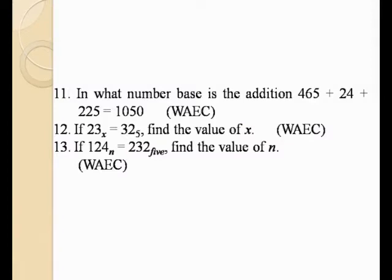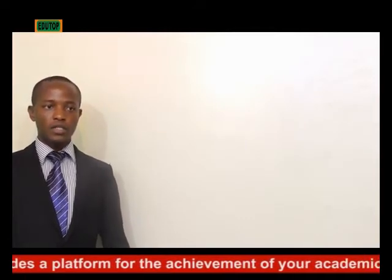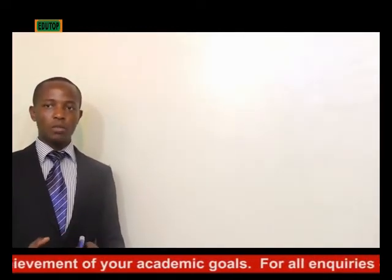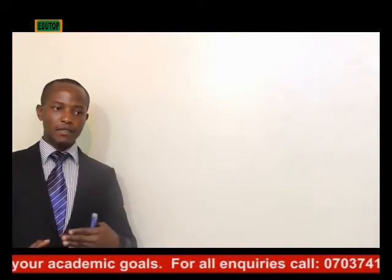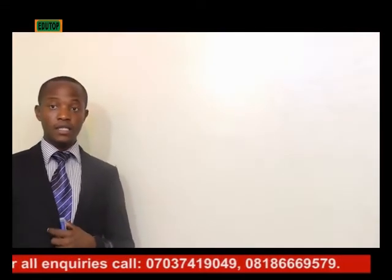Example number 11: In what base is the addition being done? 465 plus 24 plus 225 equals 1050. The question being posed is: in what base was this addition done? It is a mystery we are going to unravel. When we add, our remainders after division must correspond with the digits given in this question.